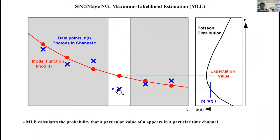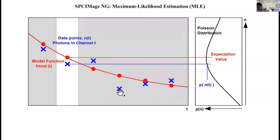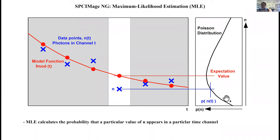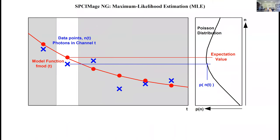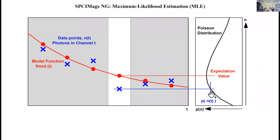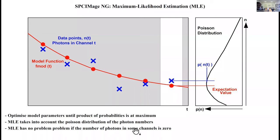Then we take the photon number in this channel, put it in the Poisson distribution, and we can find out how probable it is that we find this photon number in this time channel. We do this for all time channels, determine all these probabilities, and we multiply all these probabilities. We get a probability that our model function fits the data, and then we optimize the model parameters until this probability is maximum.